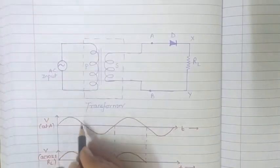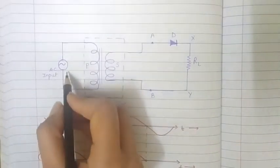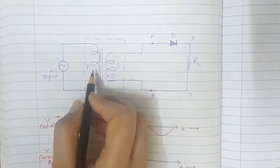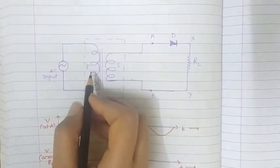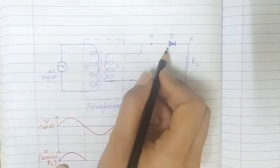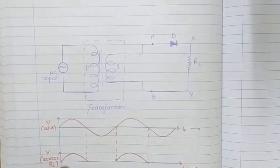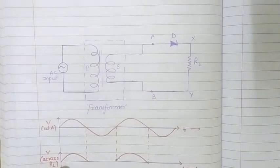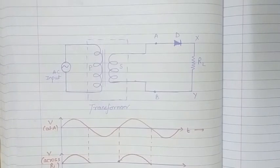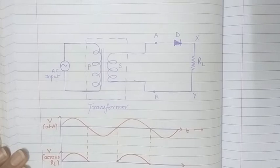The AC input that we are getting has been plotted here - this is the voltage at A with respect to time. The secondary coil is connected in series with the junction diode and the load resistance RL. We assume the diode is ideal, so it has infinite resistance during reverse bias and zero resistance during forward bias - meaning if it is forward biased it will conduct thoroughly, and if it is reverse biased it won't conduct at all.